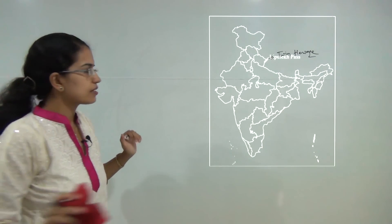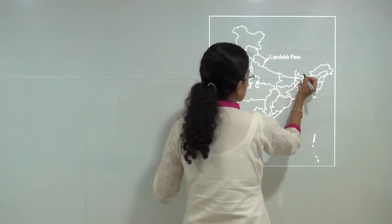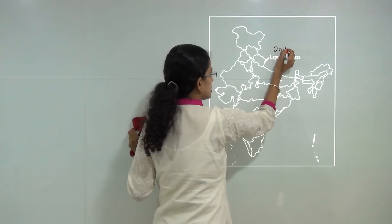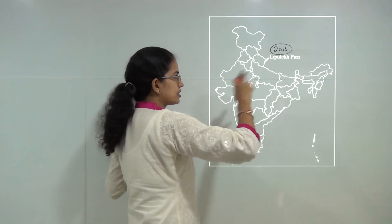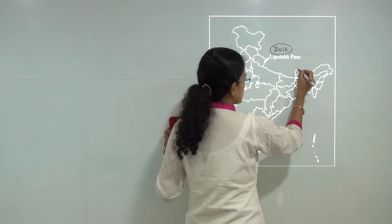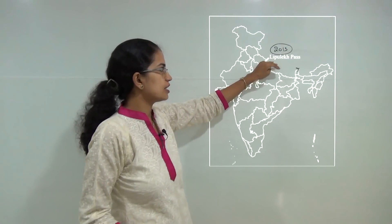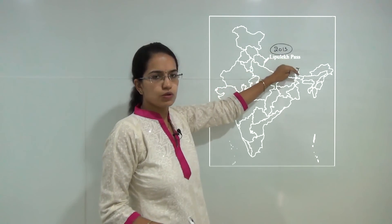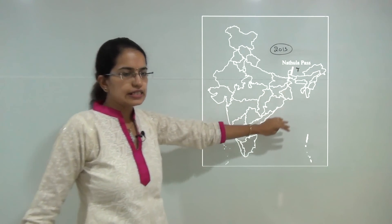Next is Lipulekh Pass. Lipulekh Pass is located in Uttarakhand. Then you have another pass that is Nathu La Pass in Sikkim. Both were in news recently because this Lipulekh Pass got destroyed in the 2013 Uttarakhand floods. As a result of the devastation of this pass, the yatra that takes place for Mansarovar was stopped through this path and has now been redirected through the Nathu La Pass. Both of the passes have come in news recently and are important.